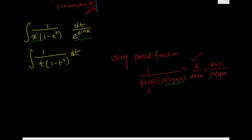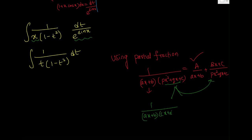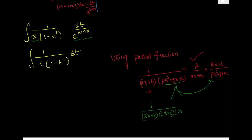If you can rewrite the denominator as a product of linear factors — such as (ax + b)(cx + d)(lx + m) — you simply write separate fractions for each linear term. I will be providing a separate video on partial fractions in detail.